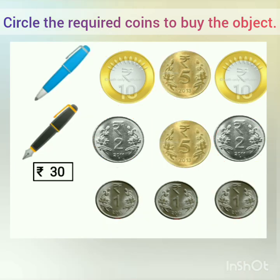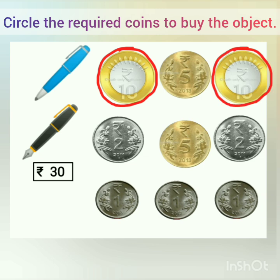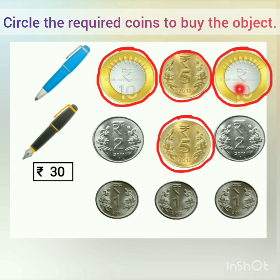There are 2 pens — both pens cost 30 rupees, so 1 pen costs 15 rupees. 15 into 2 is 30. Let's circle a 10 rupee coin, another 10 rupee coin, a 5 rupee coin, and another 5 rupee coin. Let's add: 10 plus 10 is 20, 20 plus 5 is 25, 25 plus 5 makes 30 rupees.